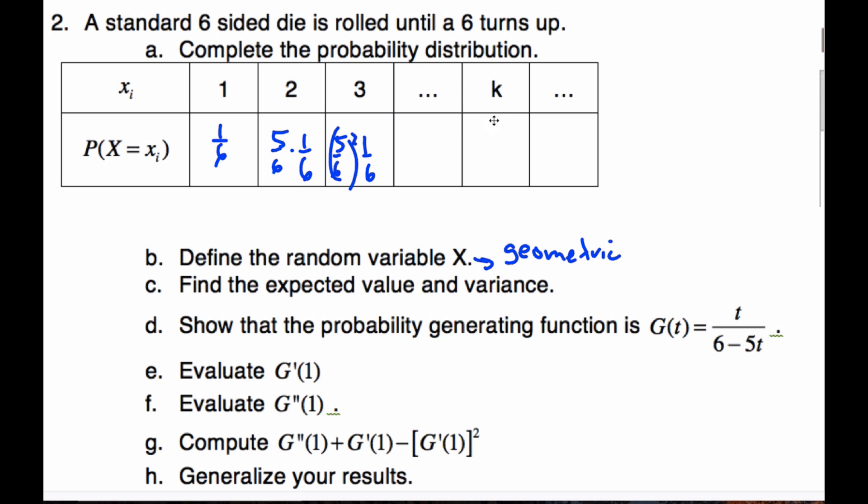And so k, if I do it k times, it's going to be five-sixths to the k minus one times one-sixth and so on. This is the probability distribution.